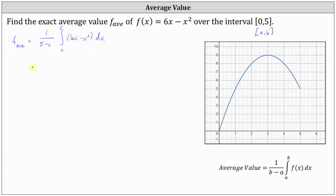Let's simplify. We have 1 5th. And then the antiderivative of 6x minus x squared is 6 times x squared divided by 2 minus x cubed divided by 3. The limits of integration are from 0 to 5.